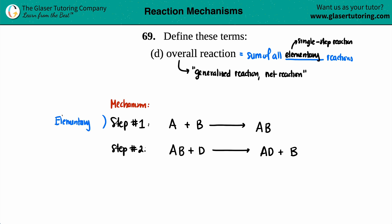So we'll just say elementary for the first one. And this is a single step by itself. Step number two, that's an elementary step. But the idea is that when you add these two steps together, you will get your overall generalized or net reaction.